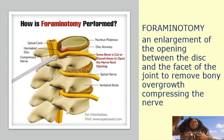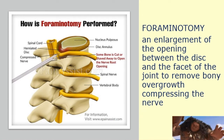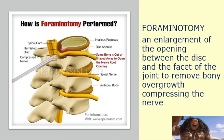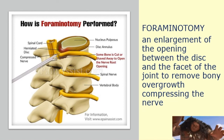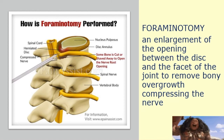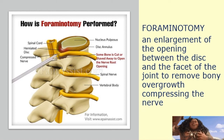Foraminotomy involves the foramen — the hole in anatomy through which the spinal cord passes. In foraminotomy, there is enlargement of the opening between the disc and the facet of the joint to remove bony overgrowth compressing the nerve. Some bone is cut or shaved away to open the nerve root opening, enlarging it to reduce pressure or compression on the nerve.